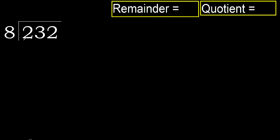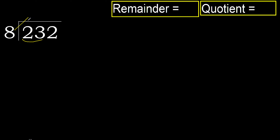232 divided by 8. 2 is less, therefore next. 23 is not less, therefore with 23: 8 multiplied by which number is nearest to 23 but not greater? 8 multiplied by 3 is 24 — 24 is greater. 8 multiplied by 2 is 16 — 16 is not greater, ok. Subtract: remainder is 7. Next.